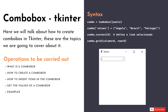Hey guys, welcome back to this channel! Today we are going to go through some more interesting Tkinter basics — it's all about the combo box. A combo box is a way of representing data where you have a bunch of values and you have to choose one of them. For example, there are many different colors but your favorite color is blue.